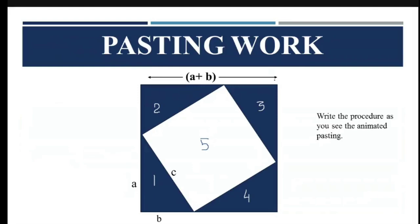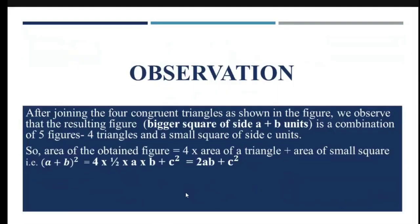The area of this square of side A + B units is equal to area of these four triangles of sides A, B and C, and the square of side C units. So the area obtained is equal to 4 × area of the triangle + area of the small square. The area of the bigger square is (A + B)². It is equal to 4 × ½AB + C² = 2AB + C².